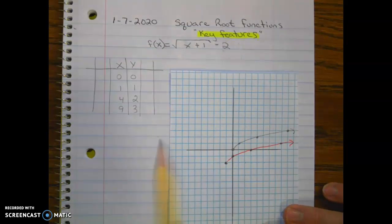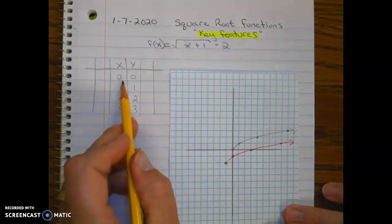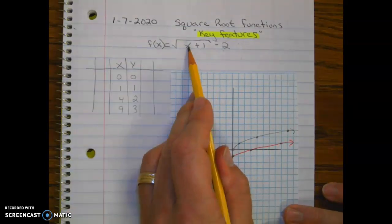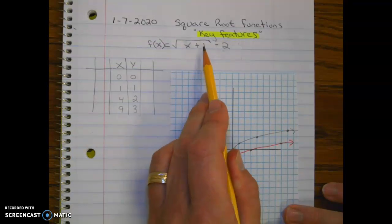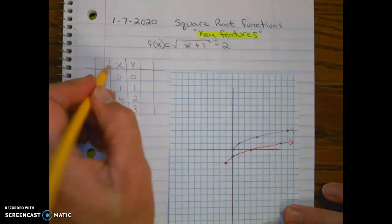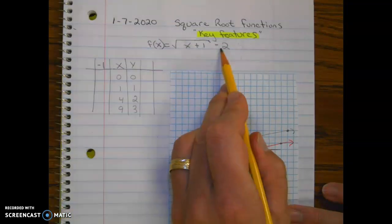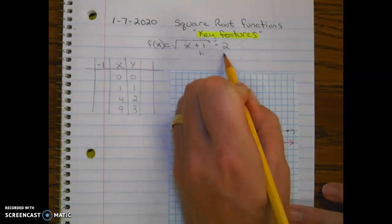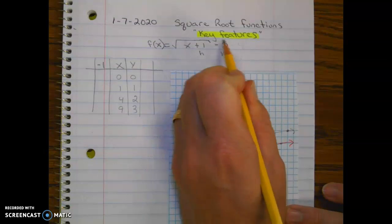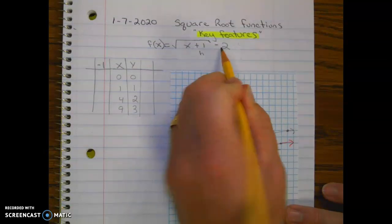And just for you to see how we change the table here, x is being affected, remember. So we're going to do the opposite, so we would subtract one. And then here, this is your h, this is your k. So y is going to decrease by two.